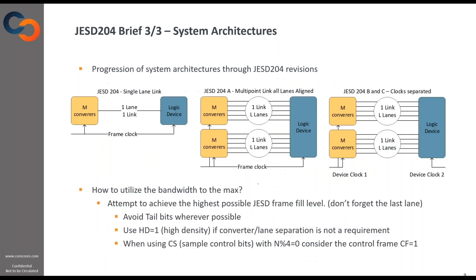Looking at different system architectures through the progression of the standards: in 204 you had a single link connecting M converters to a logic device. In the A version, a multi-point link was established — a link with L lanes could connect multiple converters to a logic device, and the A standard still shared the same clock. In B, C, and later D, the clocks are separated so you provide different clocks to each device, and if you want deterministic latency you provide SysRef to both.